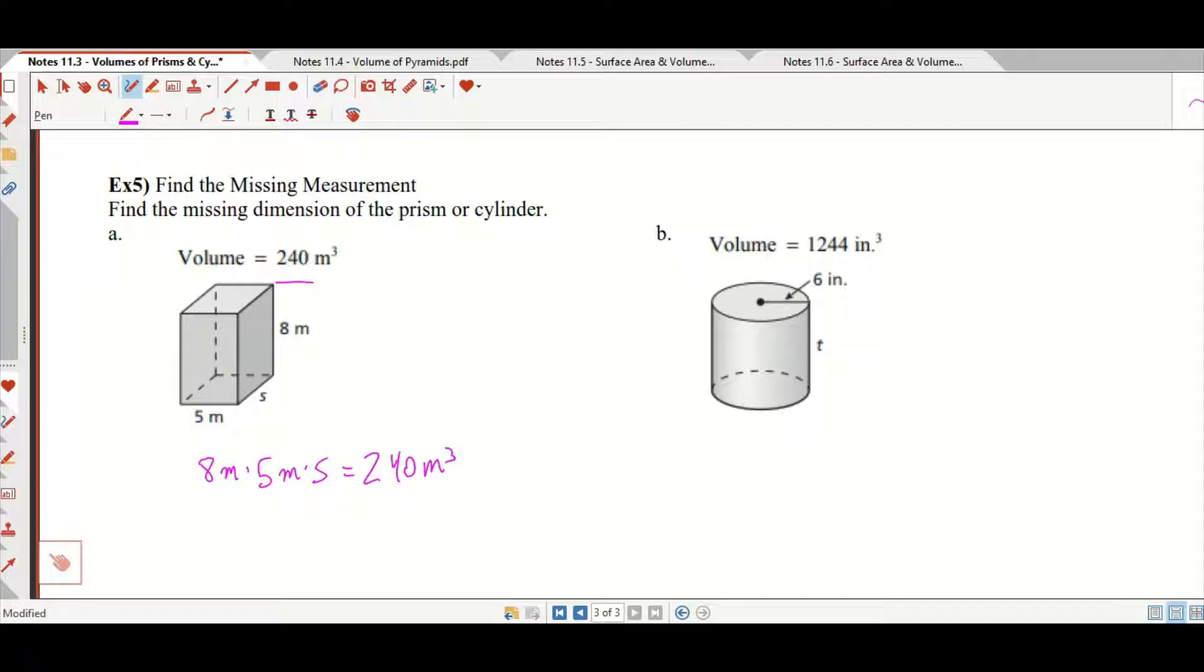Now 8 meters times 5 meters is 40 meters squared, so we get 40 meters squared times S equals 240 meters cubed. Divide both sides by 40 meters squared. Those divide out, and 240 divided by 40 is 6. So S equals 6 meters.